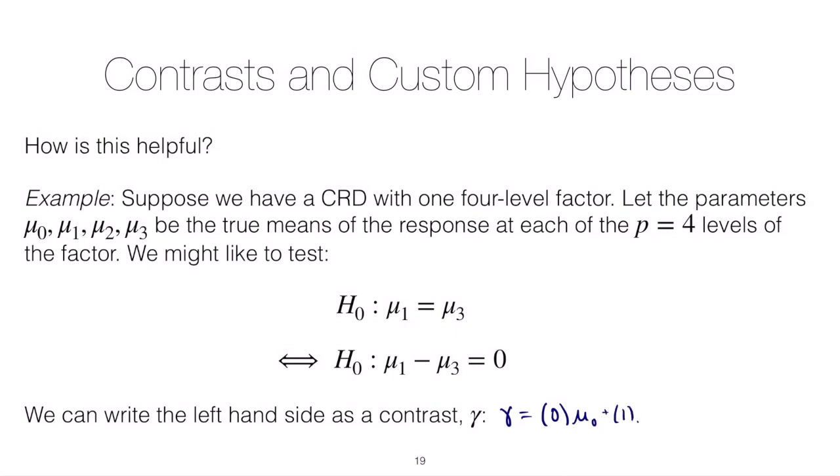We write this as 0 times mu0 plus 1 times mu1 plus 0 times mu2 plus minus 1 times mu3. Here we can see that our c would have c0 equal to 0, c1 equal to 1, c2 equal to 0, and c3 equal to minus 1. Notice that the sum of those c's is equal to 0 so it is a true contrast.